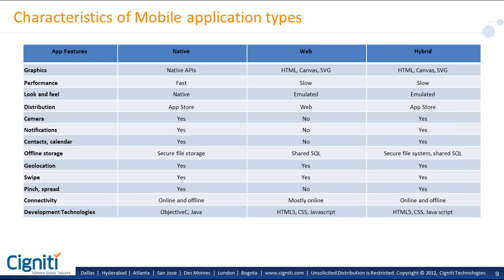Similarly, assume you are playing Temple Run and somebody calls you — how would your automation scripts be able to handle those notifications? All these complexities are involved in mobile automation, and you should have a very robust and agnostic automation framework so that it handles all these cases for you.